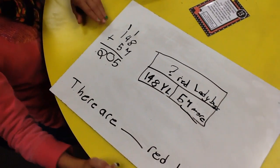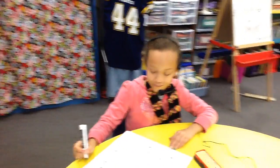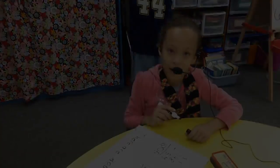So there are 205 red ladybugs on the window. And that's how you solve an addition problem using a strip diagram.